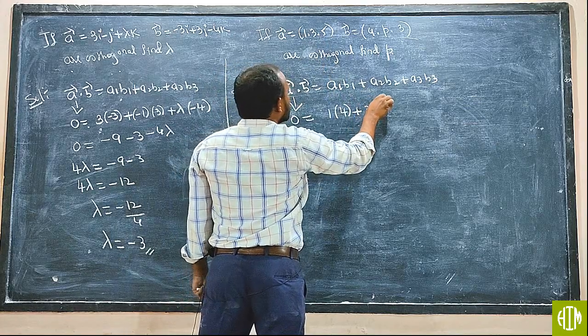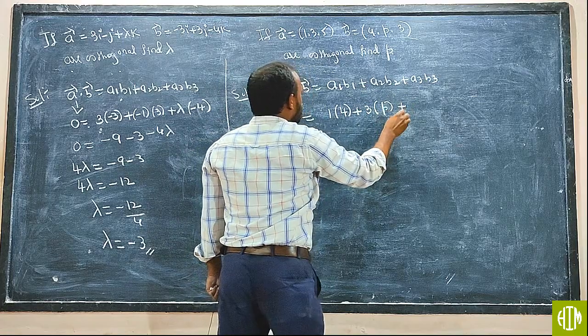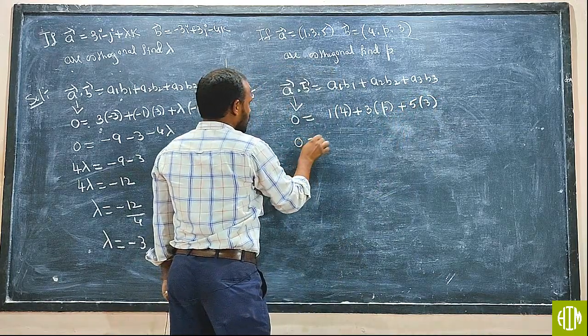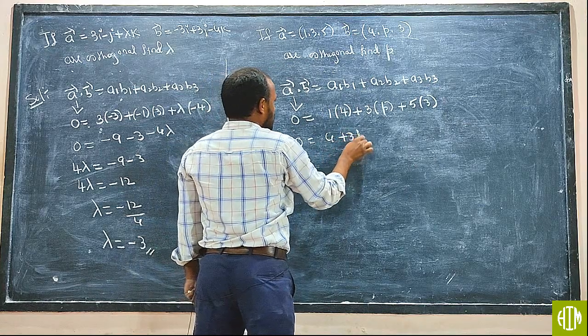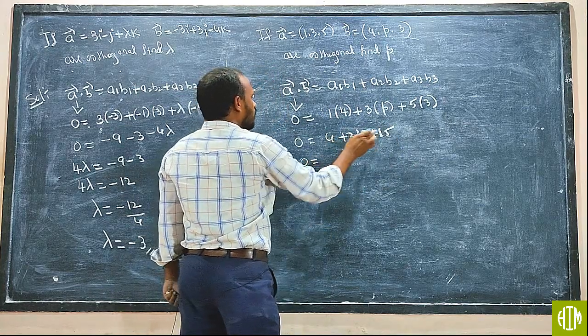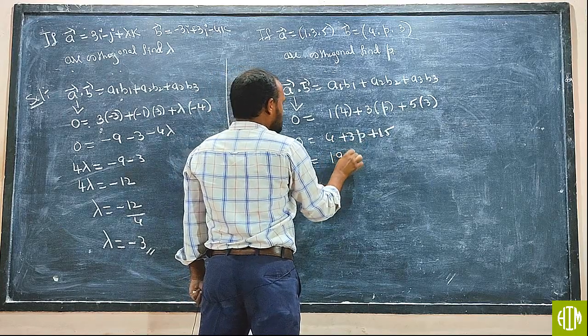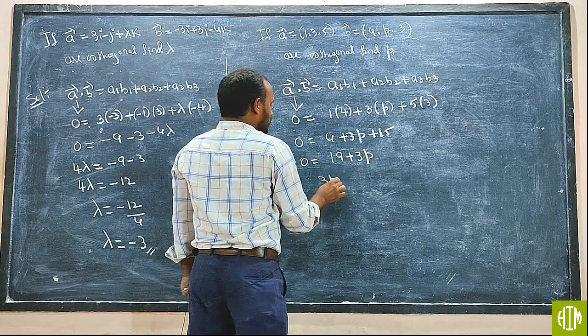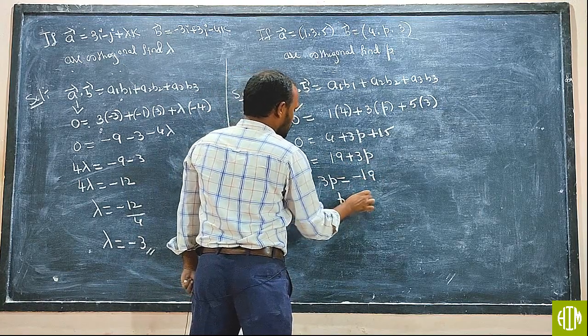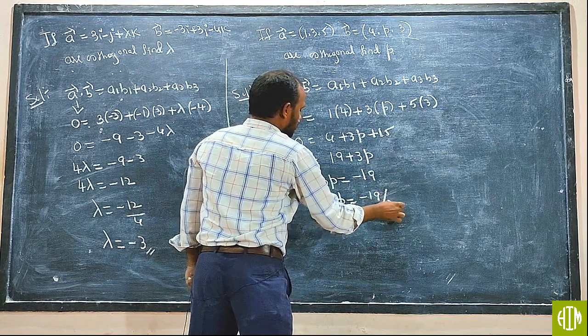So 4 plus 3P plus 15. This equals 19 plus 3P. 3P is equal to minus 19. P is equal to minus 19 by 3.